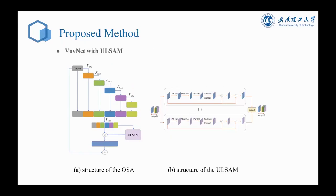OSA means one-shot aggregation and is the core component of VOVNet. It aggregates all intermediate features in the last layer at once. This strategy circumvents feature redundancy while preserving the advantages of residual connection. We combine the subspace attention module with VOVNet, which enables multi-scale, multi-frequency feature representation and better modeling of relationships between channels.